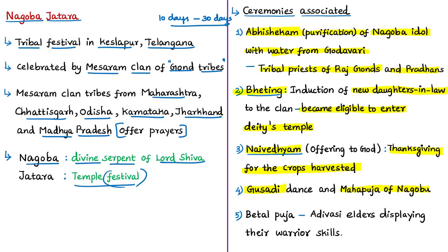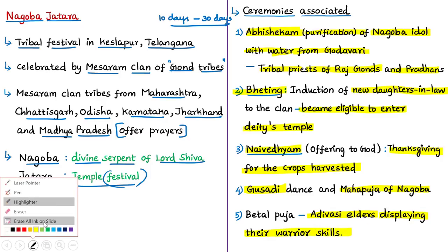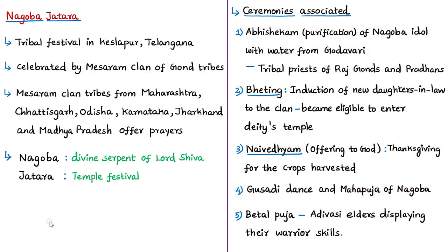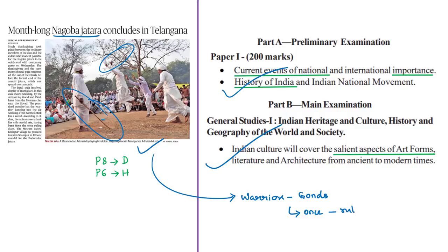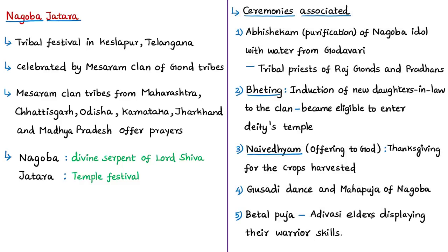The Betal Puja is the final ritual of this annual Nagoba Jatra celebration, marking the end of the month-long Jatra. During this final ritual, Adivasi elders display their skill in wielding a sword — they hold a thin bamboo stick and move it as if it were a sword. This practice denotes that the Gonds were once warriors who were familiar with martial arts and had been ruling clans in their areas.